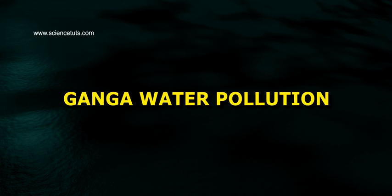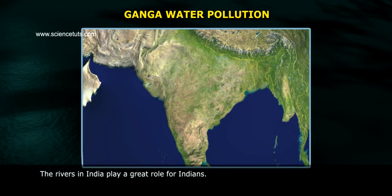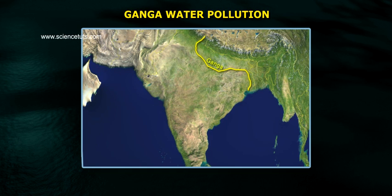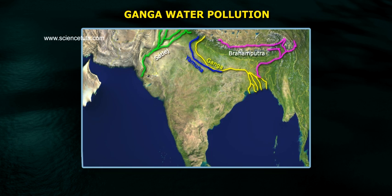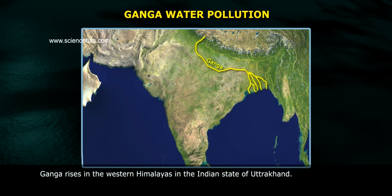Ganga Water Pollution. The rivers in India play a great role for Indians. There are several rivers in India, such as Ganga, Sathlej, Yamuna, Brahmaputra, Krishna, Kaveri, etc. Ganga rises in the western Himalayas in the Indian state of Uttarakhand.